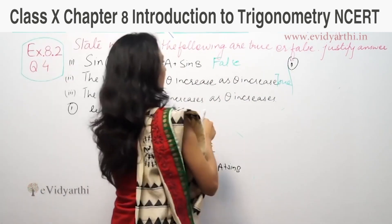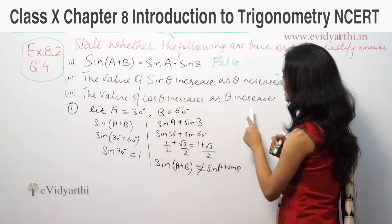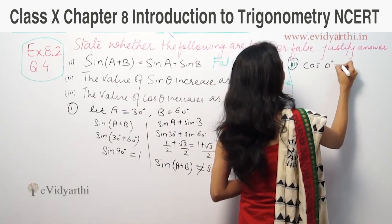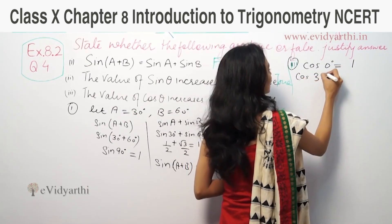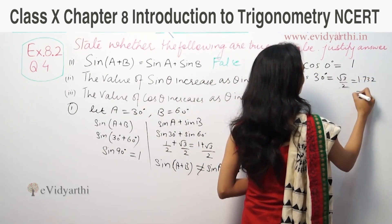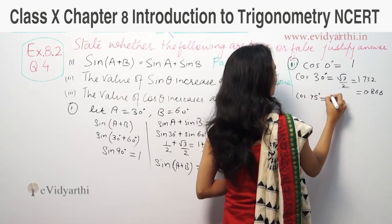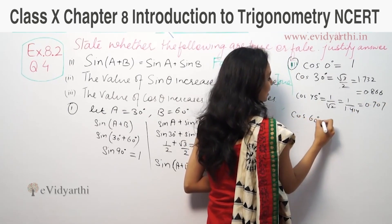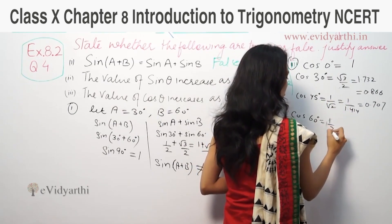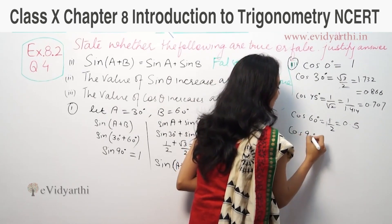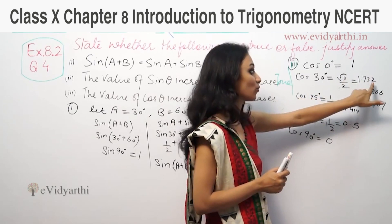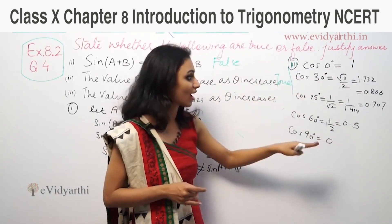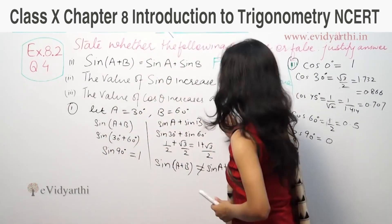Now, third part: does the value of cosθ increase as θ increases? Cos 0° is 1. Cos 30° is √3/2, that means 1.732/2, so 0.866. Cos 45° is 1/√2, that means 1/1.414, so 0.707. Cos 60° is 1/2, that means 0.5. Cos 90° is 0. So as the angle increases, the value of cosine decreases. So this statement is false.